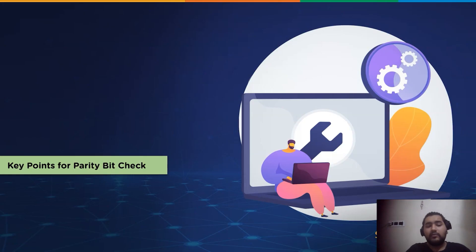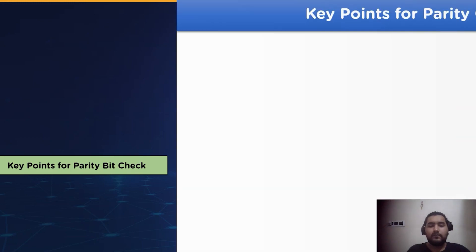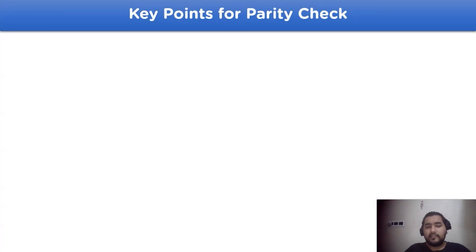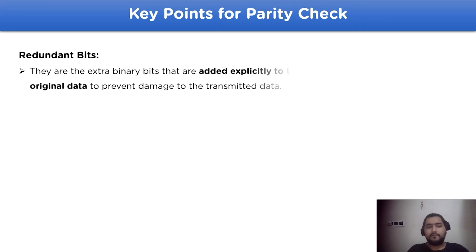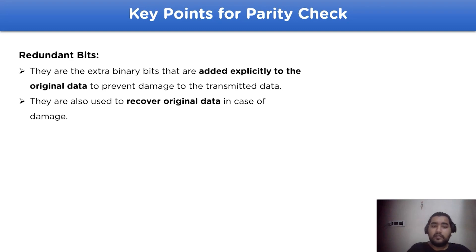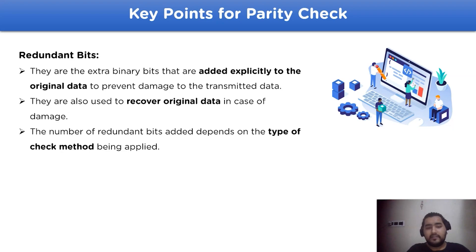Now let's move on to the key points regarding parity bit check. To properly understand its working, we need to understand some key points. The first one is redundant bits — these are the extra binary bits added explicitly to the original data to prevent or detect damage to the transmitted data. They are also used to recover the original data in case of damage at the receiver end. The number of redundant bits added depends upon the type of check method used.